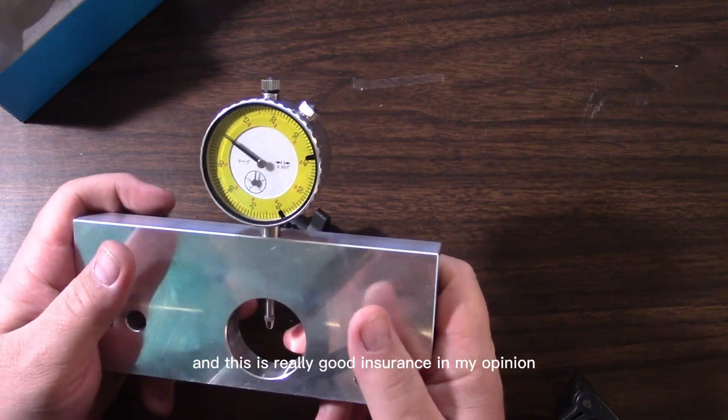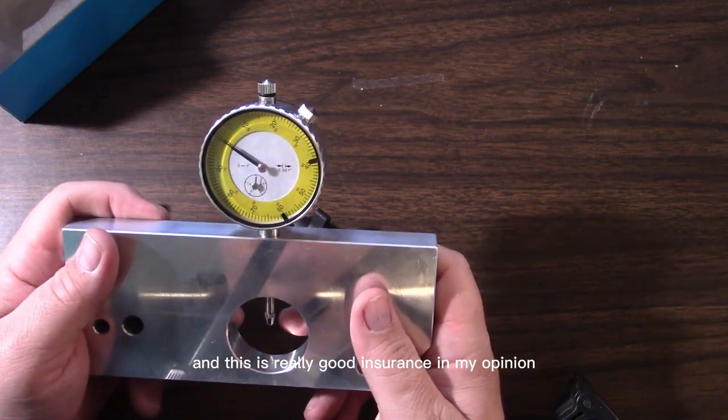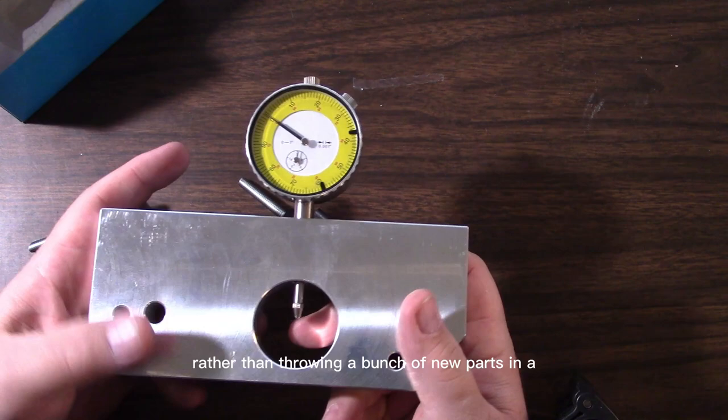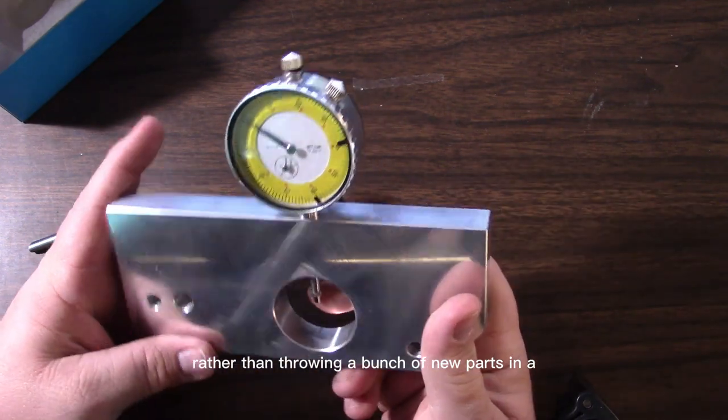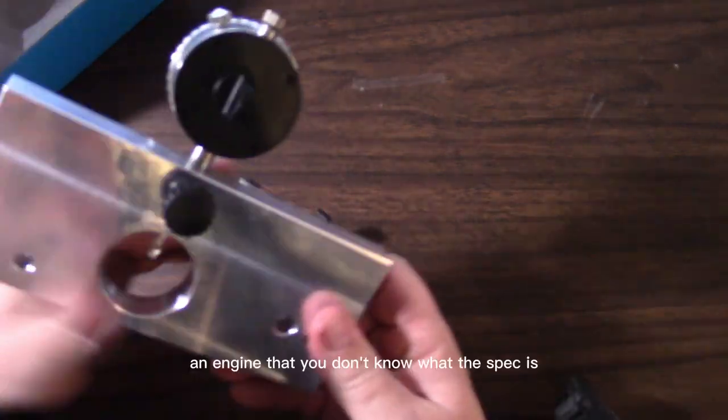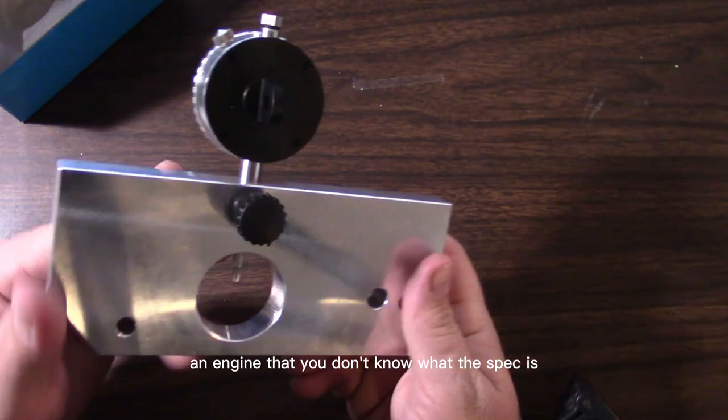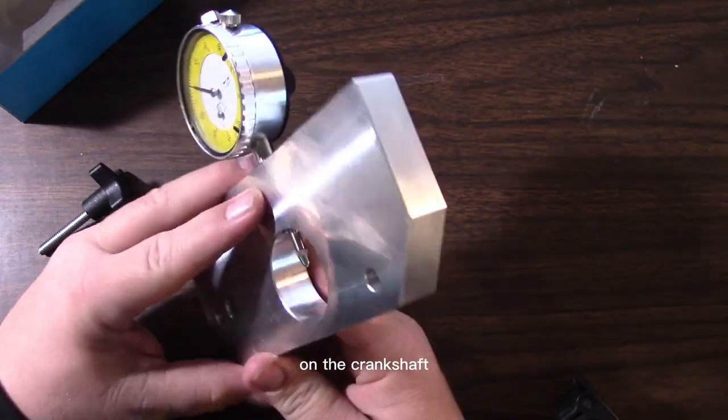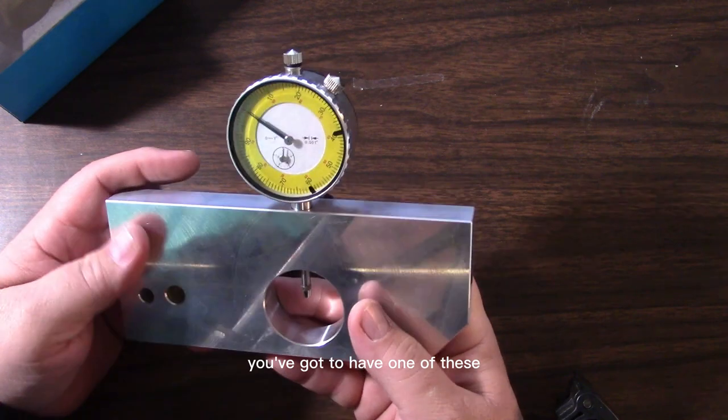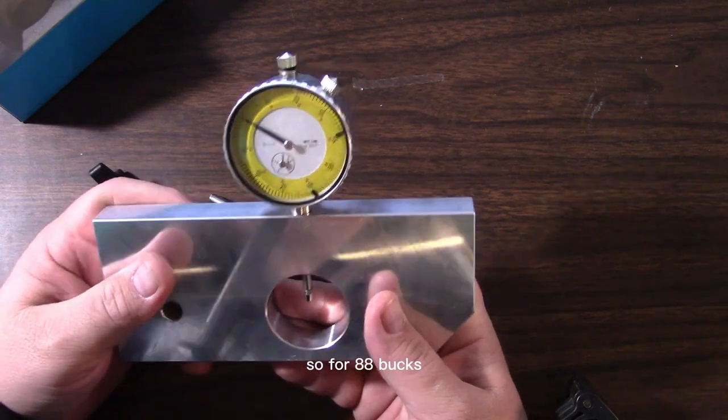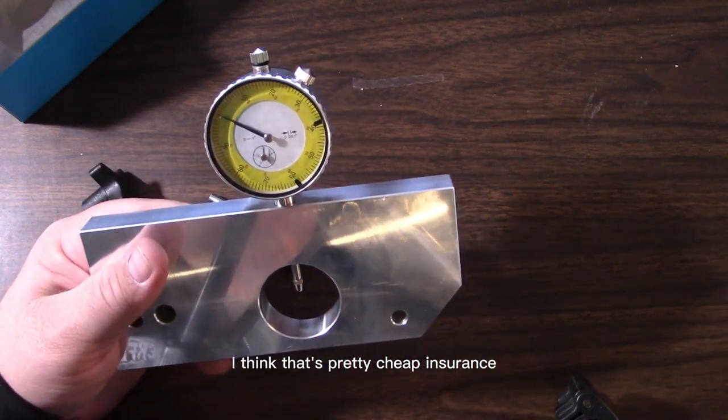Like I said, if you need one of these, the link is in the description. This is really good insurance in my opinion rather than throwing a bunch of new parts in an engine that you don't know what the spec is on the crankshaft. I think you've got to have one of these. So for 88 bucks, I think that's pretty cheap insurance.